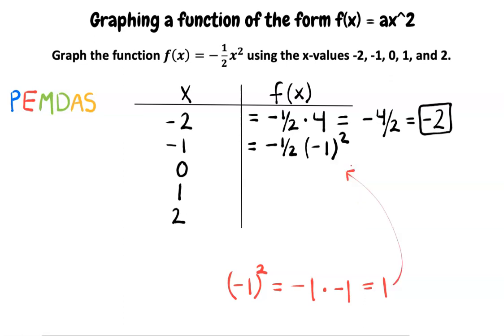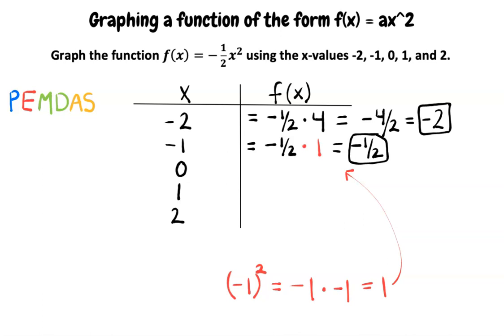So, now substituting 1 in for (-1)², the function becomes -1/2 times 1. Since anything times 1 is itself, then the answer for f(x) when x equals -1 is -1/2. Excellent work!